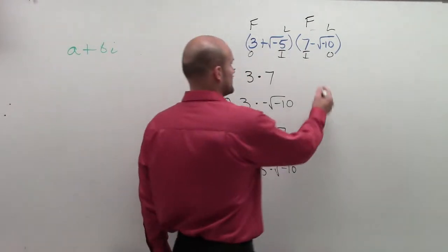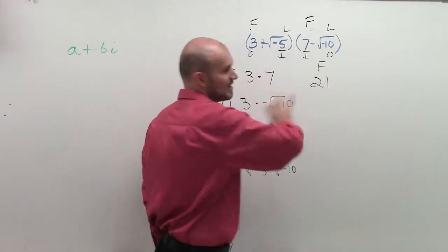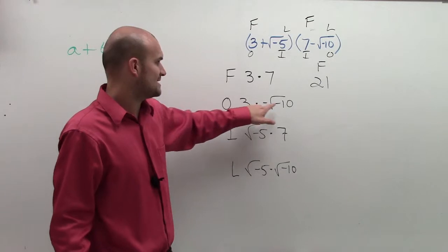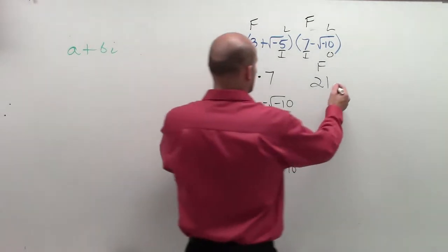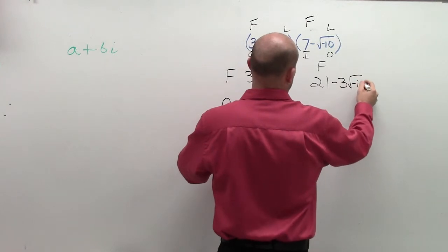So first, that's pretty easy. That's going to be 21. I'm actually now going to do that horizontally so you can see what it looks like. Outer is going to be 3 times negative square root of negative 10, which is negative 3 square root of negative 10.